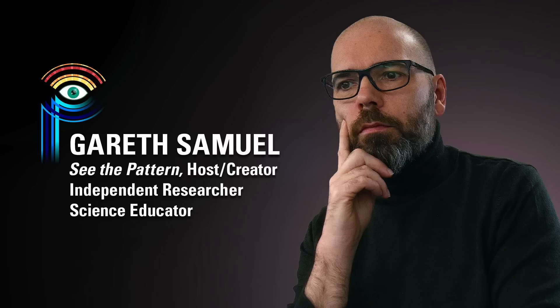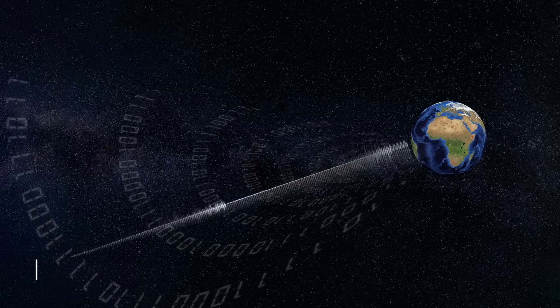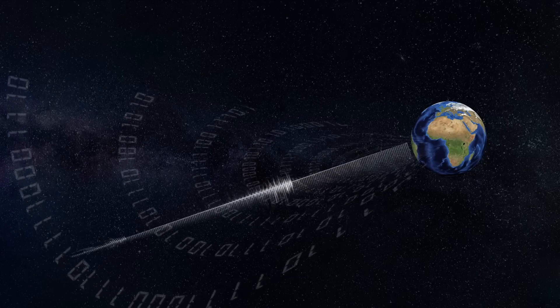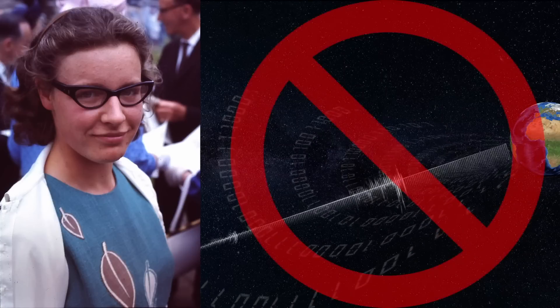Speculation as to the origin of the signal started to grow, with some even suggesting that the signal might be beamed to Earth from extraterrestrial intelligence. In December of the same year, she managed to discover a second pulsar and ruled out the idea of it being a signal from ETs.